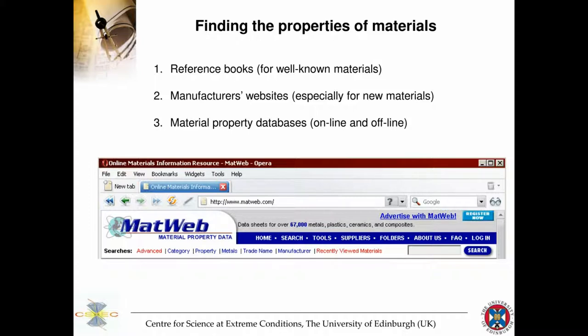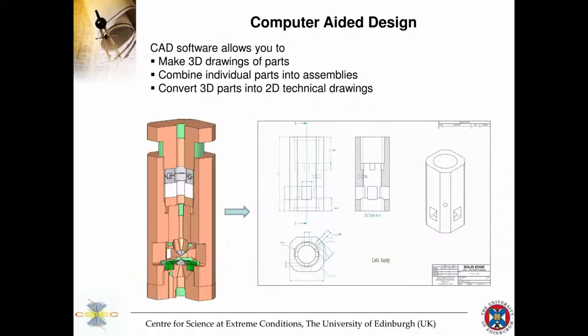Where do you find the properties of materials? You can look in reference books, manufacturers' websites, and material property databases. MatWeb is one of them, and most universities have access to it.